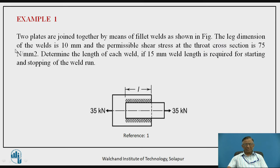This is an example in which two plates are joined together by means of a fillet weld. These are the two plates which are joined by parallel fillet weld as shown. The leg dimension of the weld is 10 mm, that is the size of the weld is 10 mm, and the permissible shear stress at the throat section is 75 N/mm². Determine the length of each weld L, if 15 mm weld length is required for starting and stopping of the weld run.